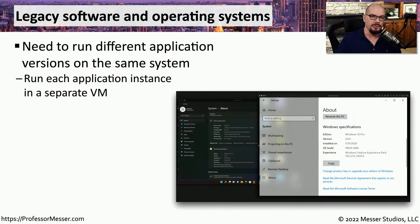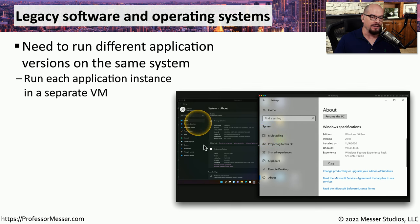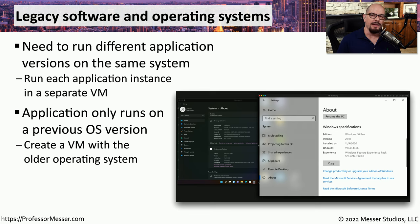One use of virtualization is to run legacy software on an older operating system while at the same time running the latest operating system on your desktop. So you could run Windows 10 on one virtual machine and Windows 11 on another, running different software in each. This is especially helpful if you have legacy software that will only run on a very specific operating system — you could create a VM just for that older OS and run your old software while still running your modern OS.